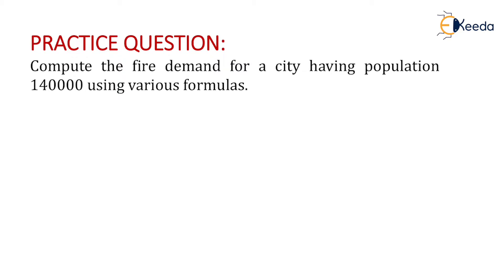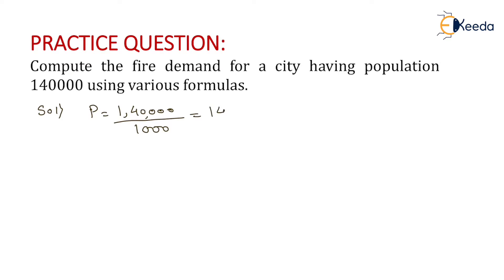We will see one by one how we will compute all the fire demands as per the Kuchlings, National Board's, Buston's and Freeman's formula. First of all, we need to compute the value of P. P will be population in thousands, so we divide the total population by 1000 and we get P equals 140.